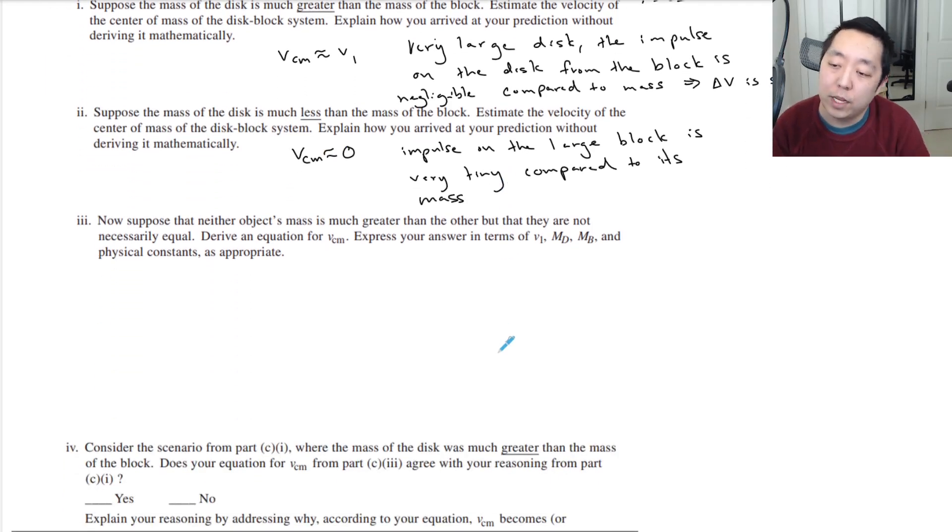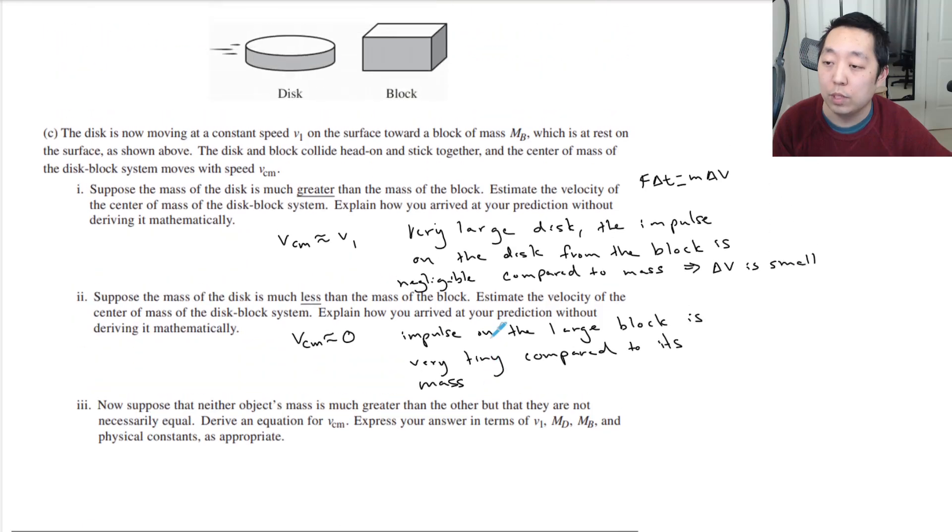Now suppose that neither object's mass is much greater than the other, but that they are not necessarily equal. Derive an equation for VCM. Now we do conservation of momentum. This guy has M of the disk, he's moving V1, and this is the mass of the block, and then together, they move at a new speed VCM.